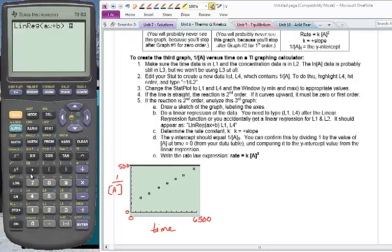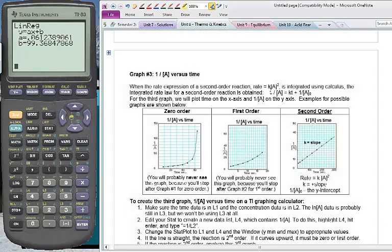So we will do L1, L4. Hit enter. And it will give us a linear regression. Basically it's going to draw a straight line through these points and tell us what the slope is and what the y intercept is. And so from that, if you go back up here to the top, what we will be graphing is 1 over the concentration, our y value equals k, the rate law constant times time, our x value times 1 over the initial concentration. And that fits into this format right here.